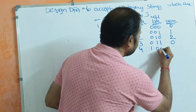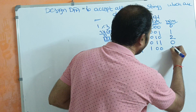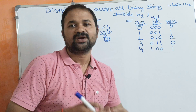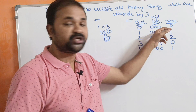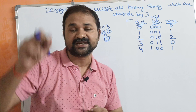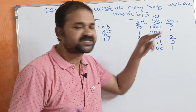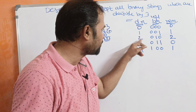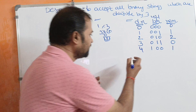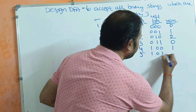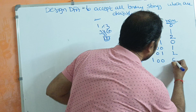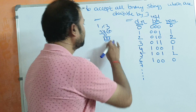For decimal 4, binary is 100, and the remainder is 1. Note that for the first four numbers 0 to 3, we can also use 2 bits: 0 as 00, 1 as 01, 2 as 10, 3 as 11. But from 4 onwards, we require 3 bits. Decimal 5 is 101 with remainder 2. Decimal 6 is 110 with remainder 0. Likewise, we can represent all the numbers this way.